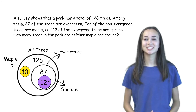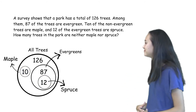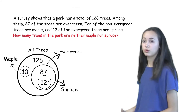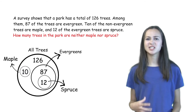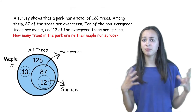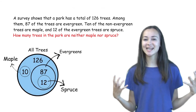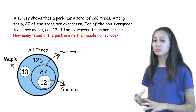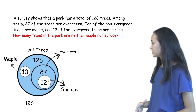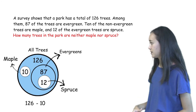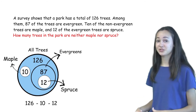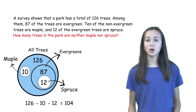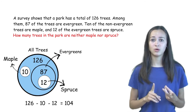Now let's use our picture to answer the question: how many trees in the park are neither maple nor spruce? This is the area inside the big circle, but outside the maple and spruce circles. So this number represents 126 minus 10 minus 12, which equals 104. There are 104 trees in the park that are neither maple nor spruce.